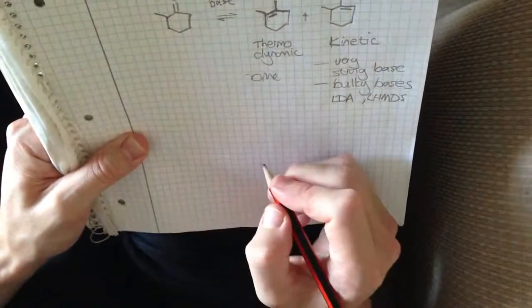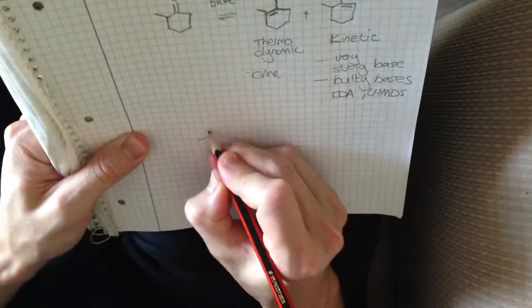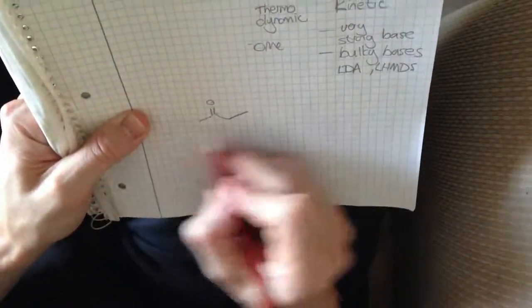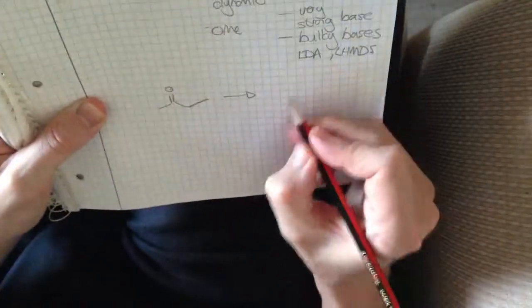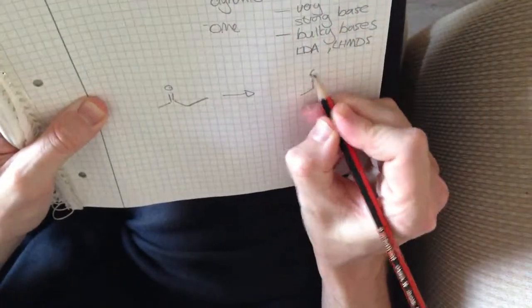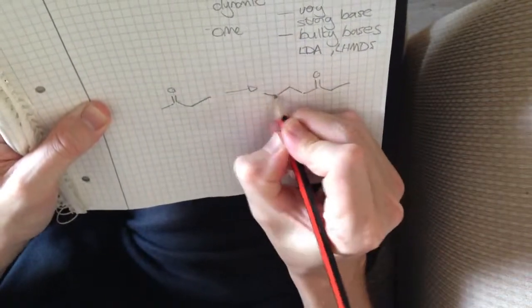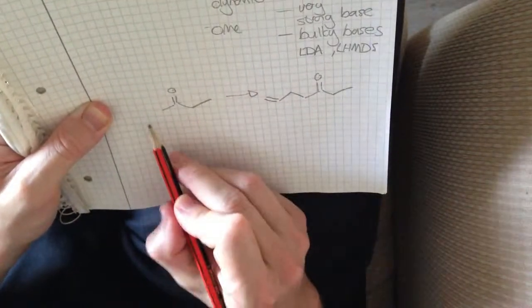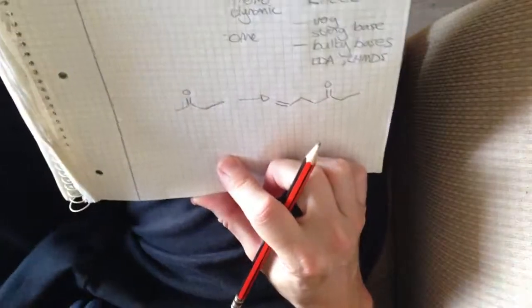So I'll leave you with something just to think about. Say I've got this ketone over here. This is butanone. And what I want to do is, I want to make this compound here. What conditions would I need, and reagents, in order to achieve that? And so I'll leave that as a question for you to consider.